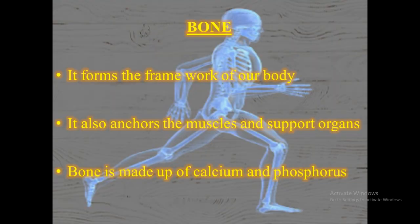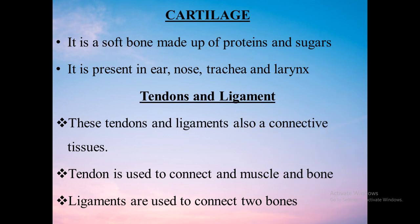The next type is bone — it is a hard connective tissue. Blood is a fluid connective tissue, whereas bone is a hard connective tissue. It forms the framework of our body, anchors the muscles, and supports the organs. Bone cells are very strong and non-flexible and are embedded in a hard matrix. Another connective tissue is cartilage, which is present in the ear, nose, trachea, and larynx.